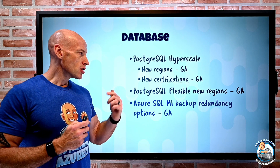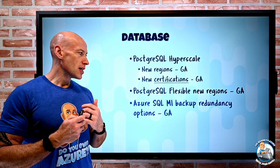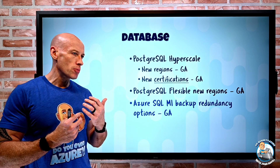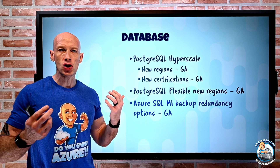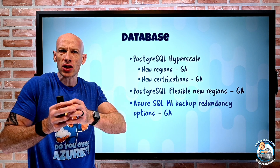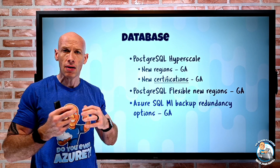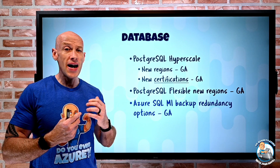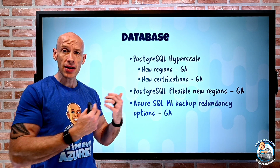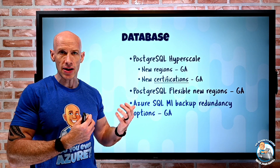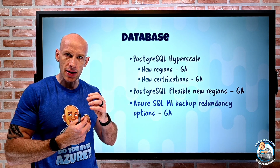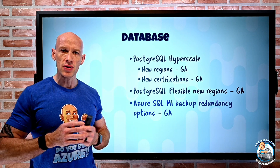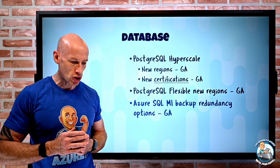Azure SQL Managed Instance now has backup redundancy options available in GA. By default it's GRS-RA, but I can also specify LRS or ZRS. Remember, ZRS is three copies spread over availability zones in the same region.